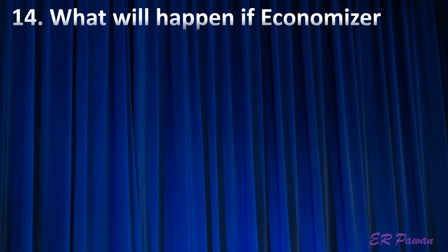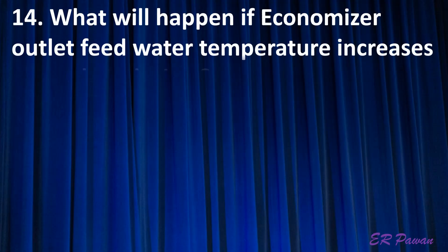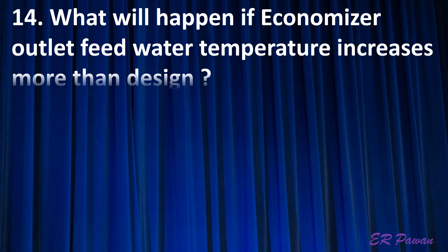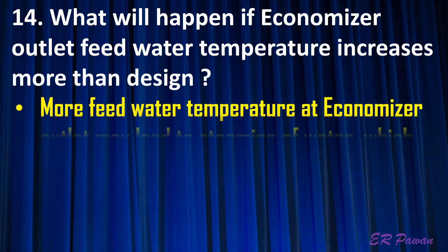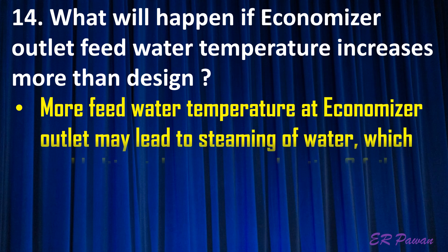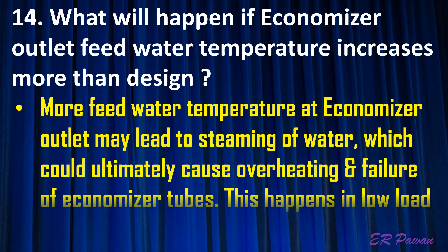Question 14: What will happen if economizer outlet feed water temperature increases more than design? More feed water temperature at the economizer outlet may lead to steaming of water, which could ultimately cause overheating and failure of economizer tubes. This happens in low load operation.